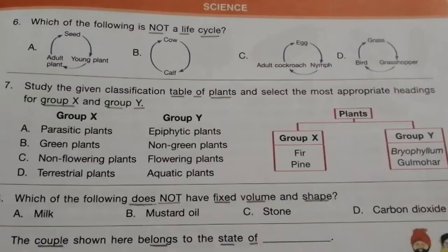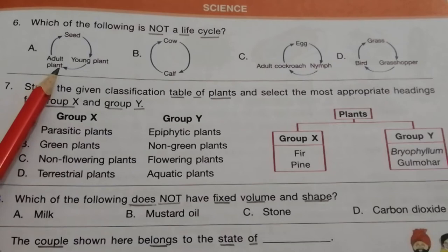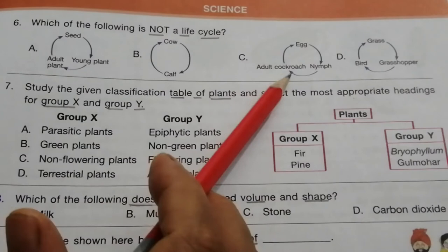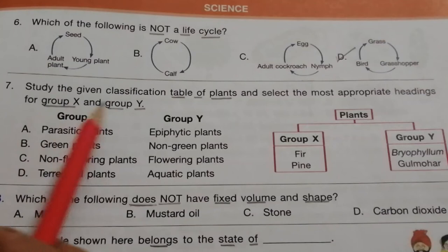Question 6 (Science): Which of the following is not a life cycle? Seed → young plant → adult plant is a life cycle. Cow → calf is a life cycle. Egg → nymph → adult cockroach is a life cycle. Grass → grasshopper → bird is not a life cycle. The answer is D.